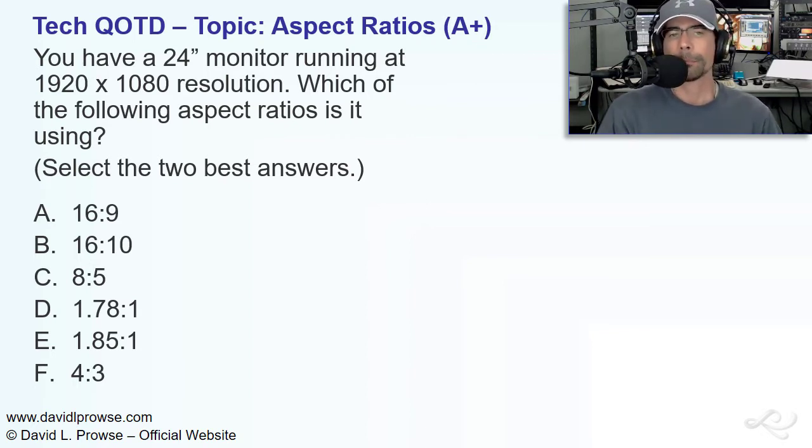Okay, we're back, and the best answers are going to be A, 16:9, and D, 1.78:1. Those are the aspect ratios for 1920x1080 resolution. And that's common for watching videos or playing games. So, the 1920x1080 resolution, that is also known as 1080p, right? 1080p, that is 1920x1080. And 16:9 is what we usually use as the aspect ratio.